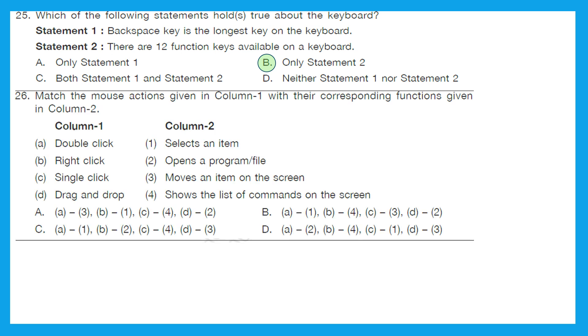Question 26: match the mouse actions given in column 1 with their corresponding functions given in column 2. So let's match. A is double click. So what happens when we double click? We open a program or file. So column 1A matches column 2 to 2. Right click shows the list of commands on the screen. B matches 4. Single click selects an item. C matches 1 and drag and drop moves an item on the screen. D matches 3. What do we get? A2, B4, C1 and D3. And the right option is option D.